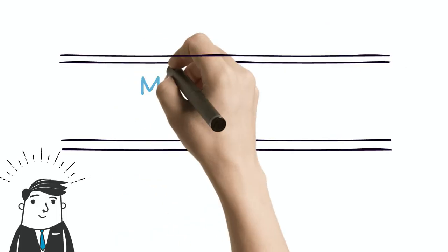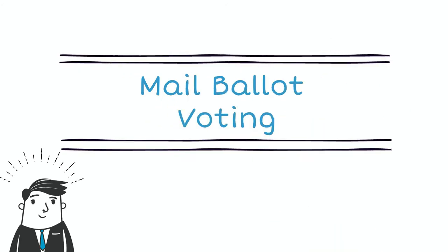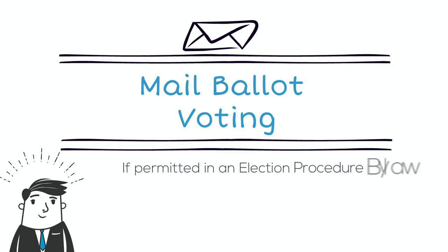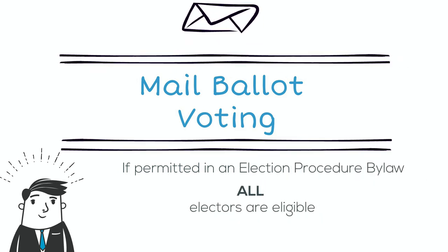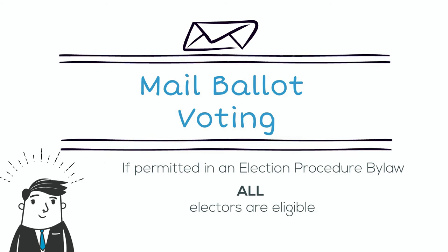Through their election procedure bylaw, local governments may choose to allow electors to vote by mail ballot. If they do, all electors are eligible to vote by mail and can contact their local government to find out more information.